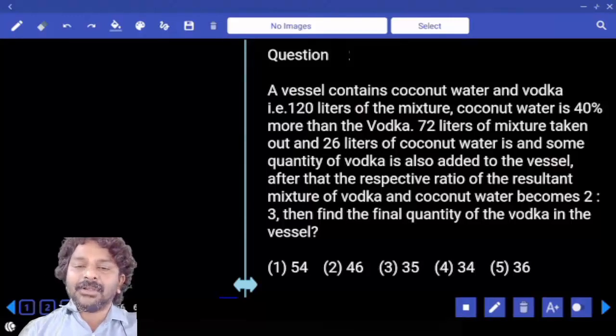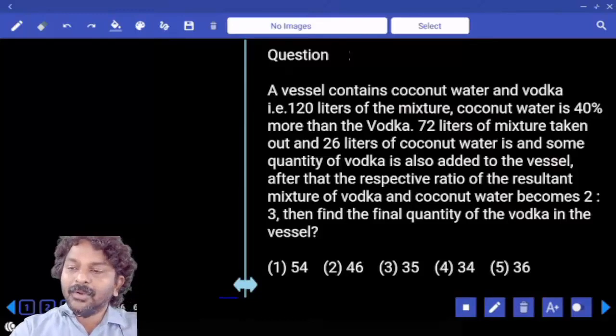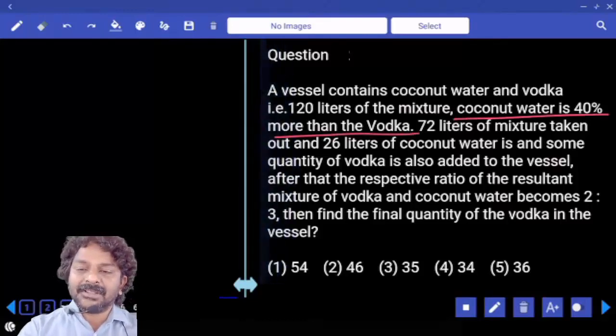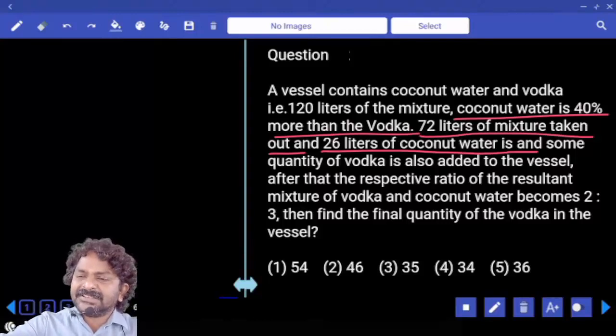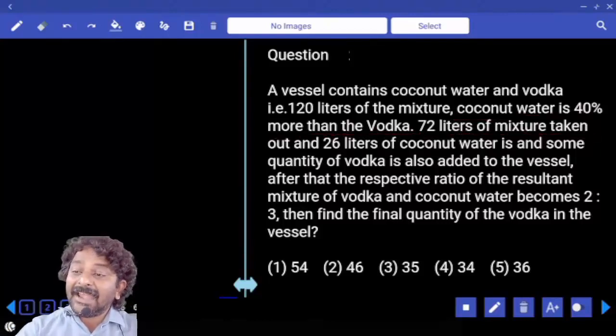The vessel contains coconut water and vodka, that is 120 liters of the mixture. Coconut water is 40% more than vodka. 72 liters of mixture taken out, 26 liters of coconut water is added.